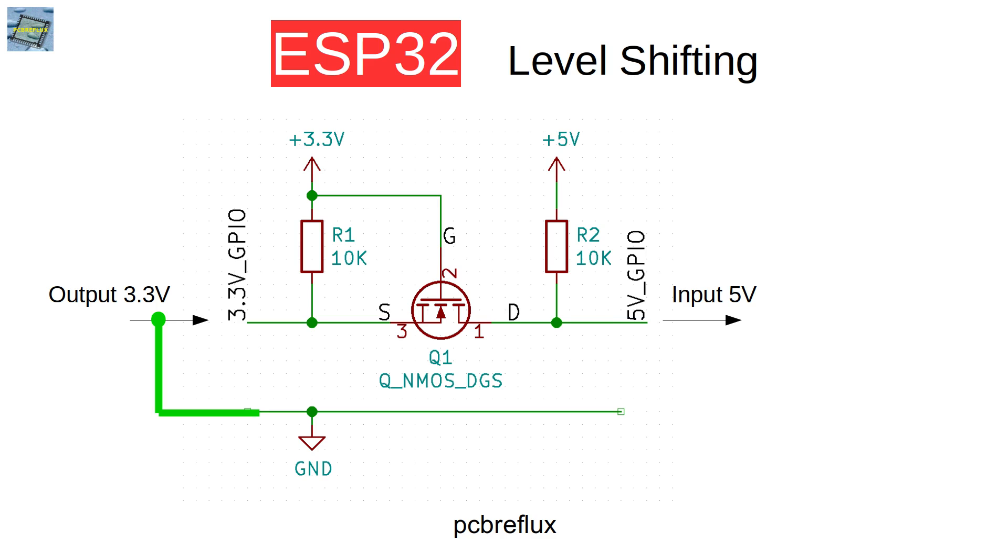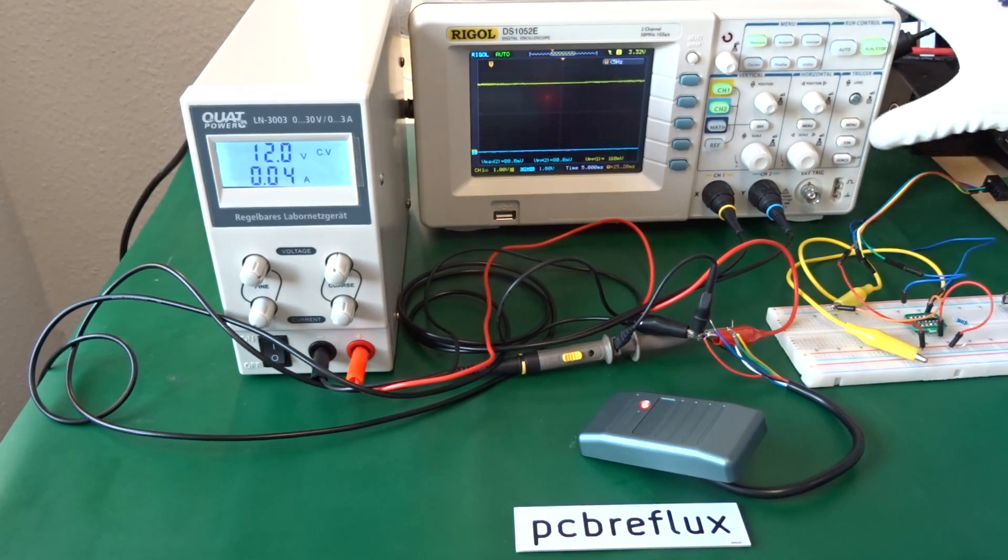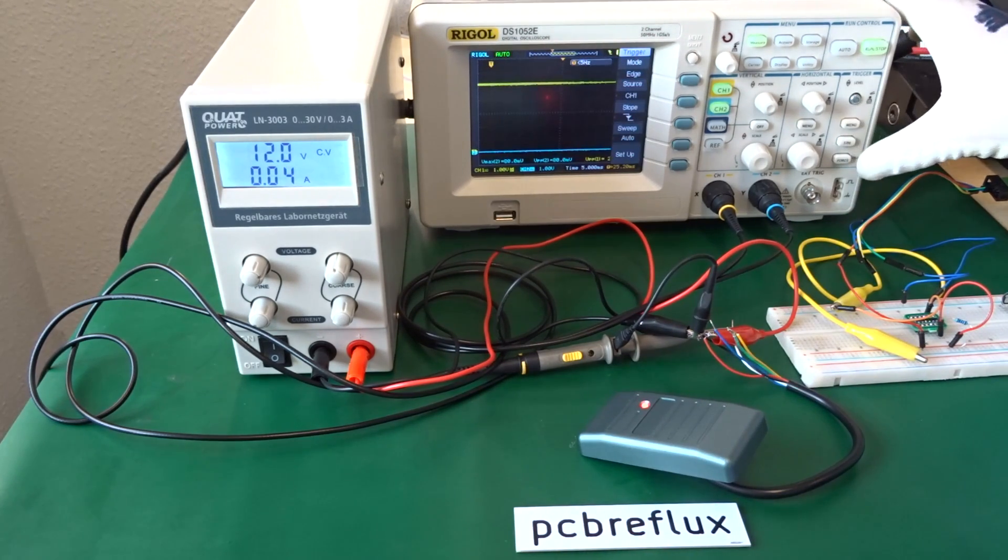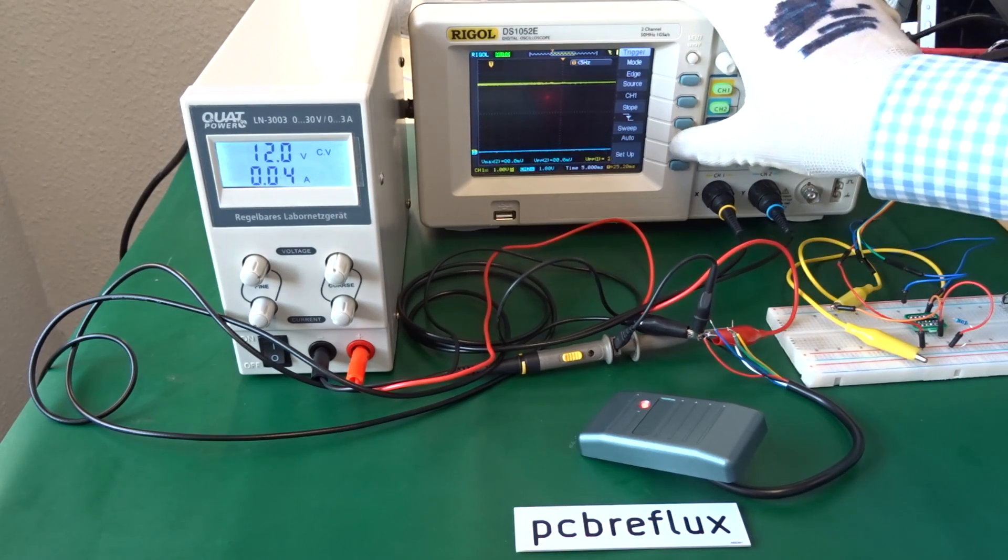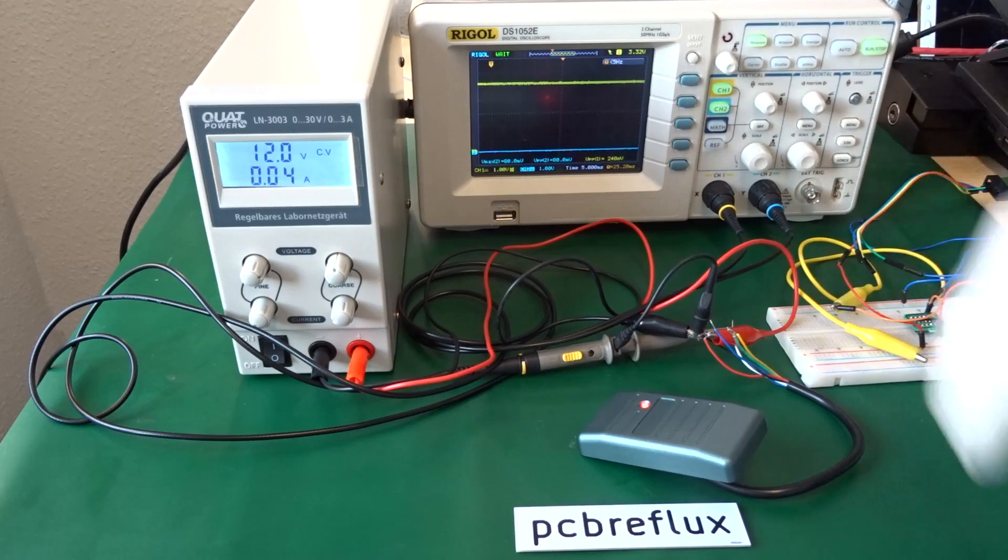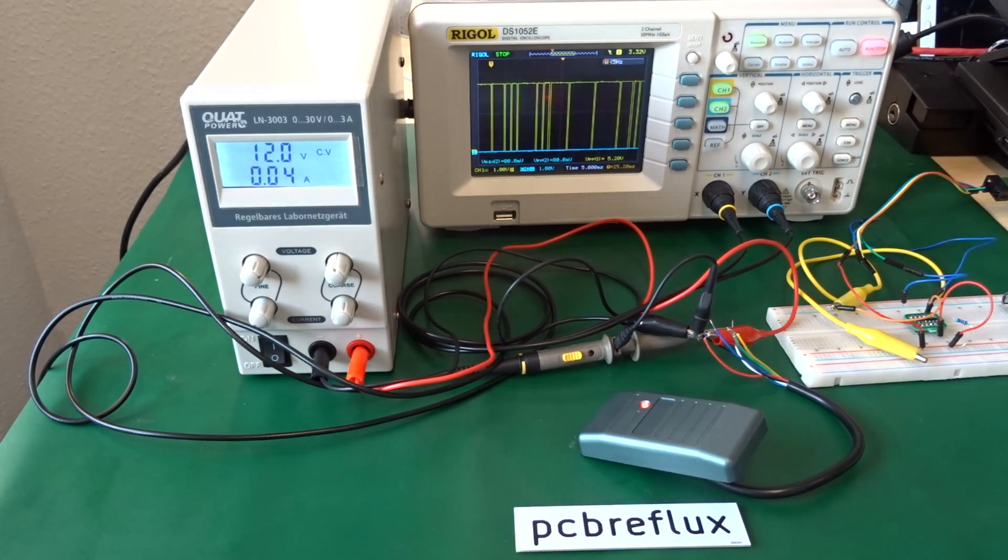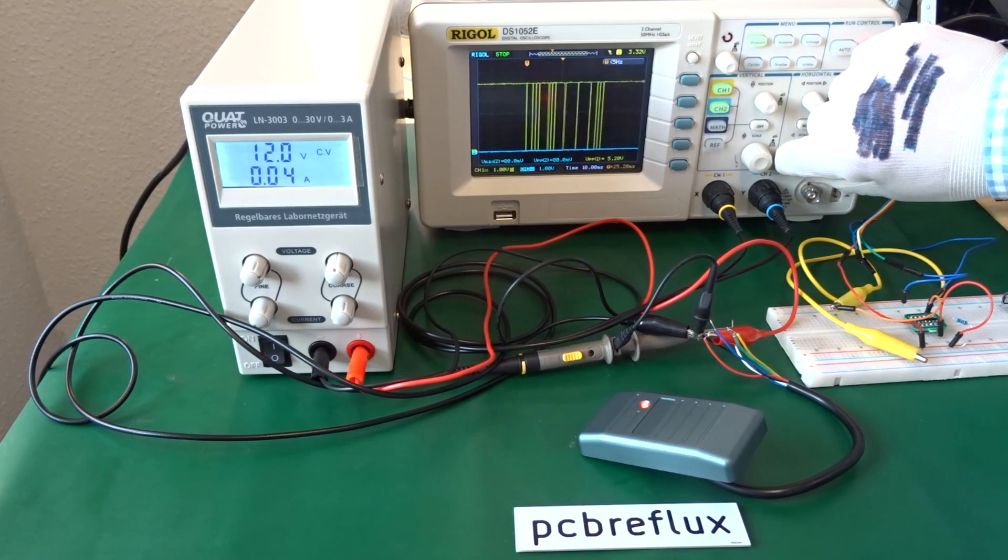So our level shifter works on both side and not only at 3.3V and 5V this works also on different voltage levels and here a practical example at the bench with a 5V output sensor and first we try to use this without a trigger and then I switch on the trigger on the oscilloscope to capture the output signal of our sensor and the next signal pulses are captured with our trigger level